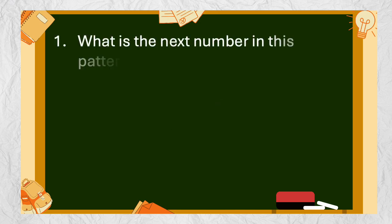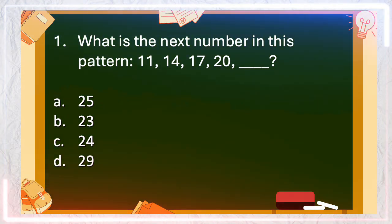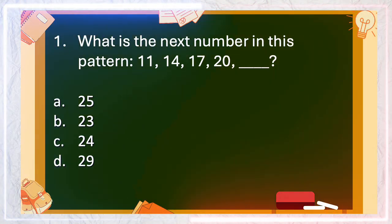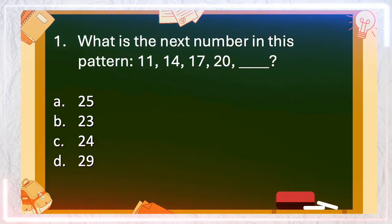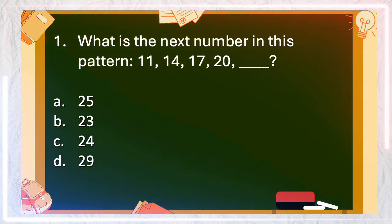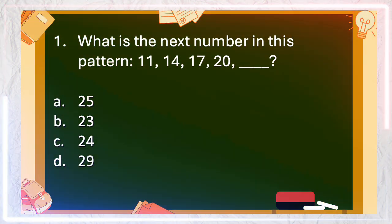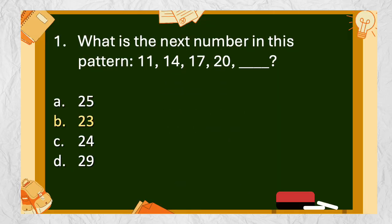Number 1: What is the next number in this pattern? A. 25, B. 23, C. 24, D. 29. The answer is B. 23.